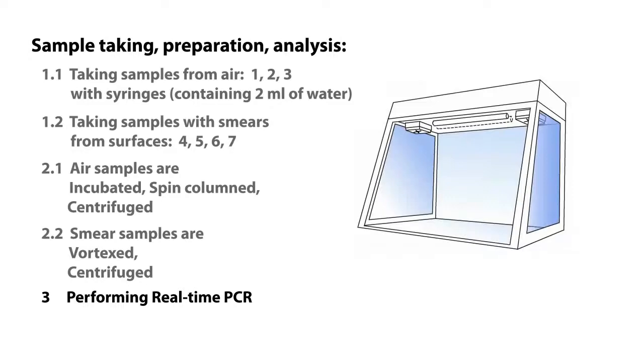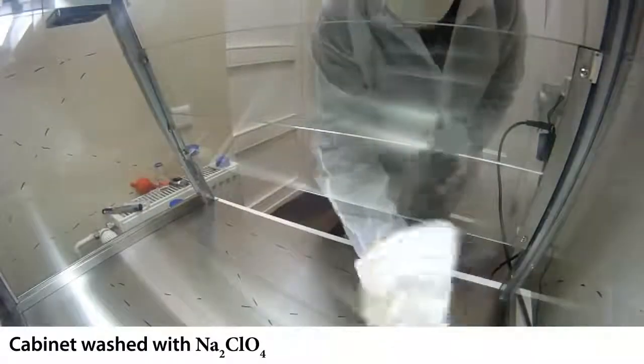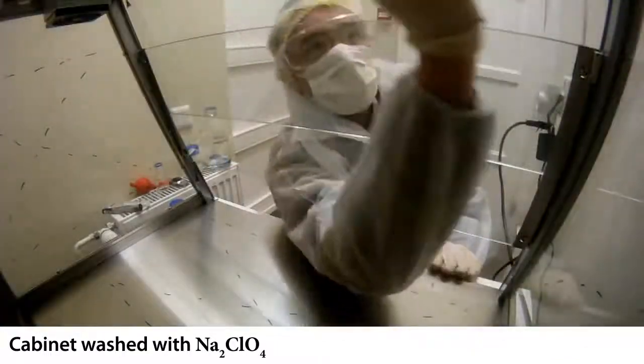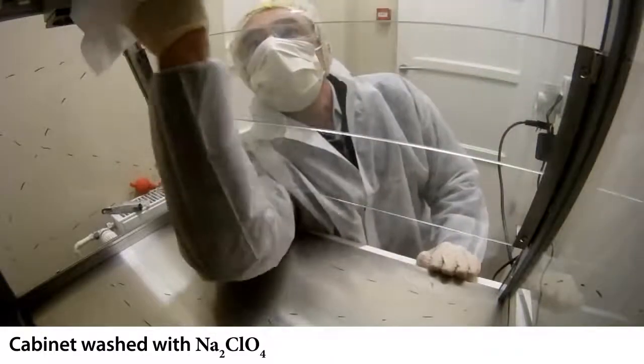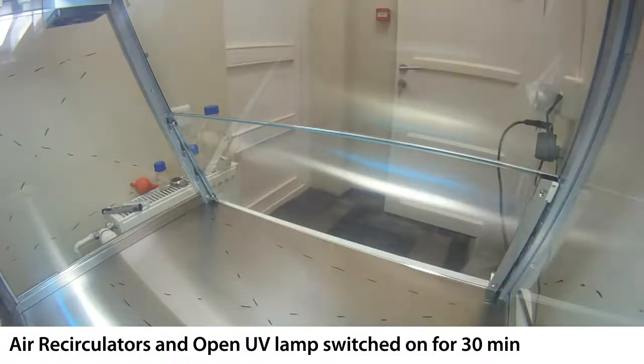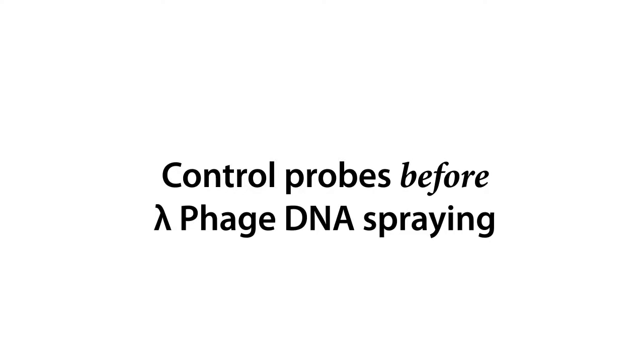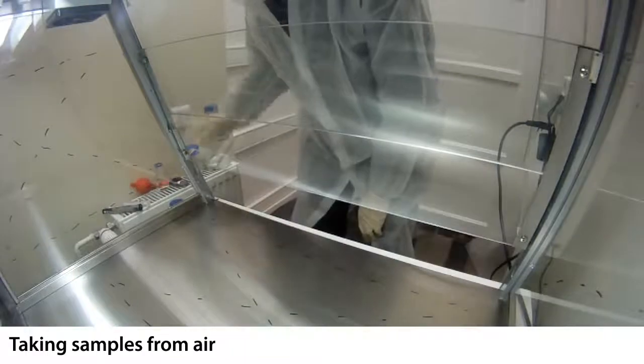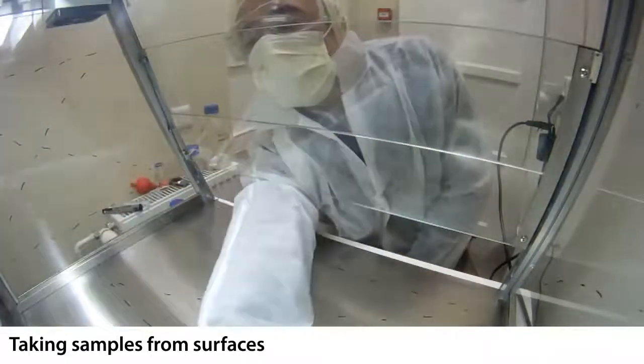Now you are going to see the video of the actual experiment. Before we start, the cabinet must be prepared by washing with sodium chlorate, followed by UV air circulation and open UV lamp irradiation. Three samples are taken from air with syringes. Four samples are taken from surfaces with smears.